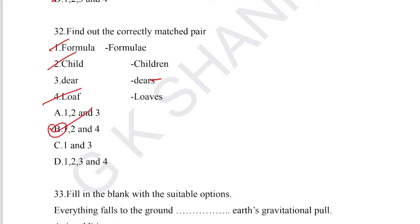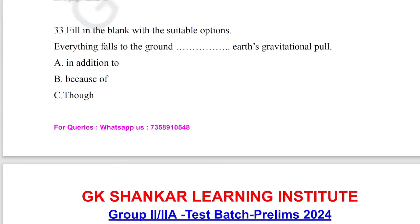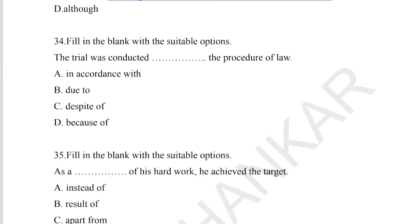Question number 32: find out the correctly matched pair — plural forms. Options: formula/formulae, child/children, dear/dear, loaf/loaves. One, two, and four are correct. Option B is the correct answer for question number 32.